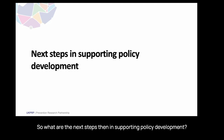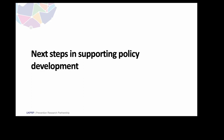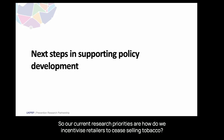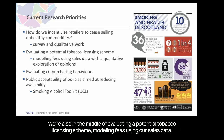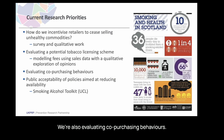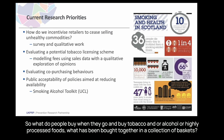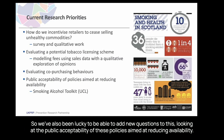Current research priorities include: how to incentivize retailers to cease selling tobacco through surveys and qualitative work with retailers; evaluating a potential tobacco licensing scheme and modelling fees using sales data; evaluating co-purchasing behaviours — what people buy alongside tobacco, alcohol or highly processed foods; and using the smoking and alcohol toolkit to assess public acceptability of policies aimed at reducing availability.